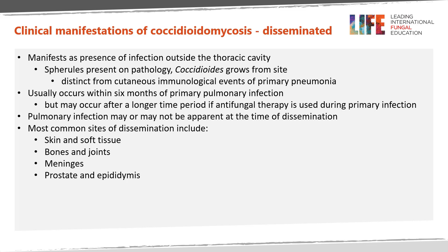Disseminated disease is the presence of infection outside the thoracic cavity, where spherules are present on pathology or Coccidioides grows from the site. This is distinct from the cutaneous immunological events of primary pneumonia. Such dissemination usually occurs within six months of primary pulmonary infection, but may occur after a longer period if antifungal therapy is used during primary infection. The most common sites of dissemination include skin and soft tissue, bone and joints, meninges, and occasionally prostate and epididymis.